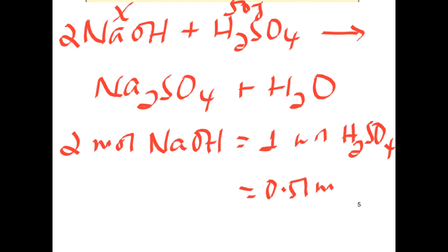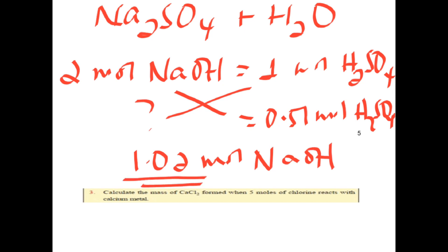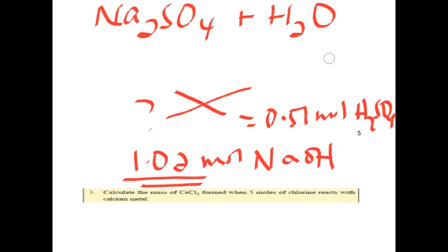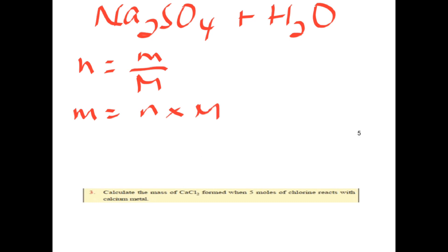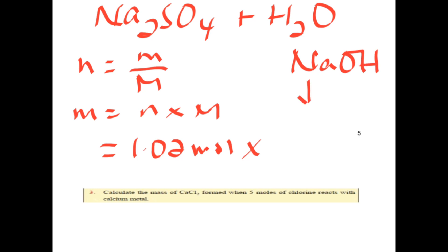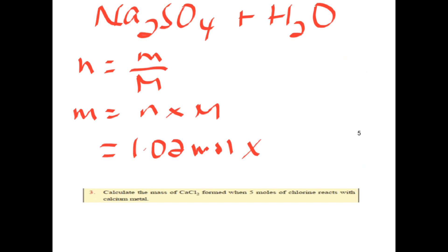0.51 moles of sulfuric acid gives 1.02 moles of sodium hydroxide needed. The mole equals mass over molar mass. 1.02 moles; the molar mass of sodium hydroxide — sodium, oxygen, hydrogen — is 40 grams per mole. The molar mass of sodium hydroxide is 40 grams per mole.